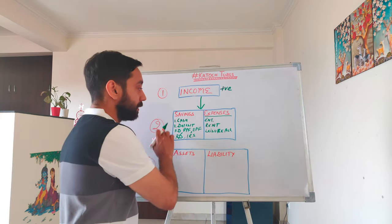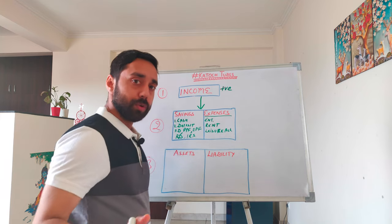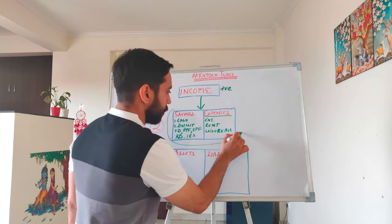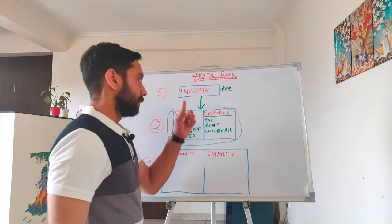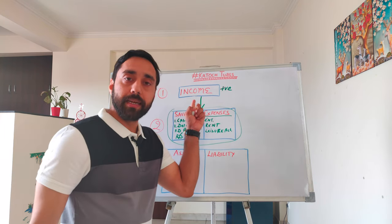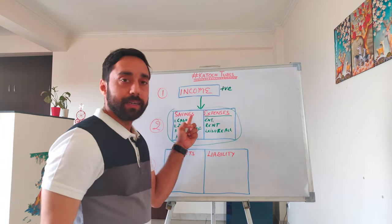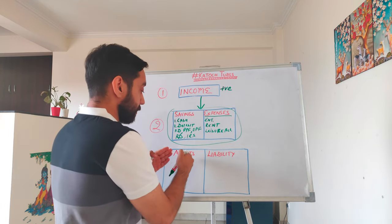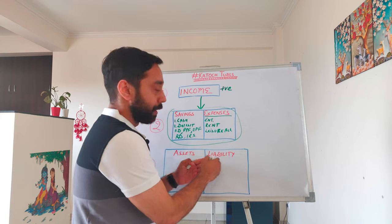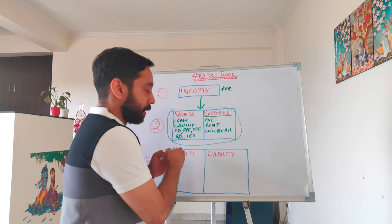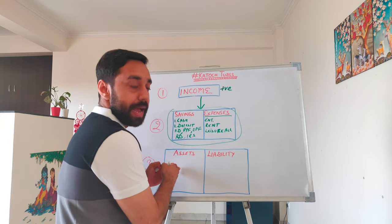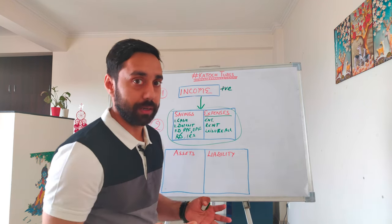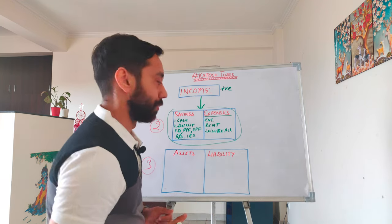These are the basic structures. Most people get stuck in this cycle — earning an income, saving it, and spending it. But the next stage is assets and liabilities. Very few people go to this particular step and make their wealth system strong. Let's find out how they do it.